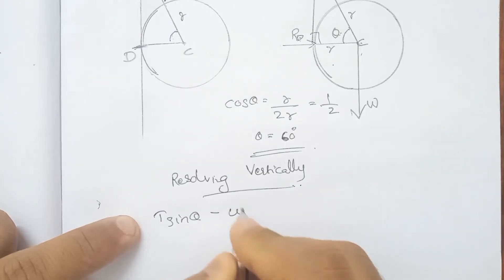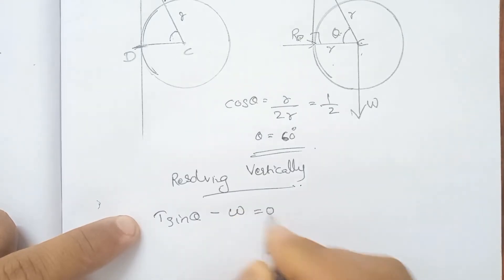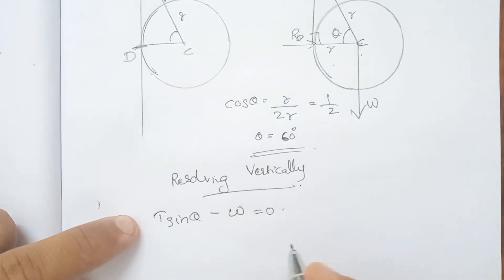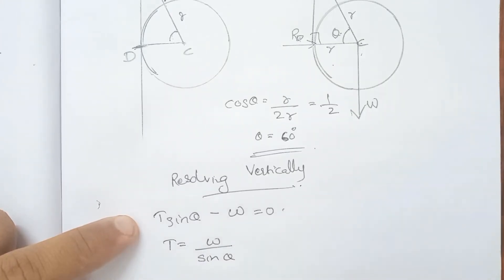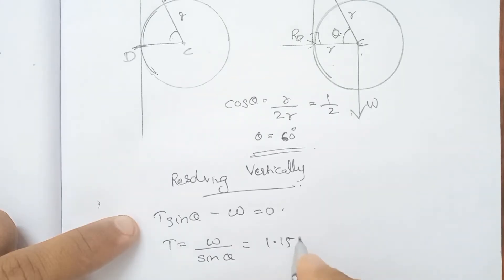T sin theta minus W is equal to 0, so T is equal to W divided by sin theta. The answer is T equals 1.154W.